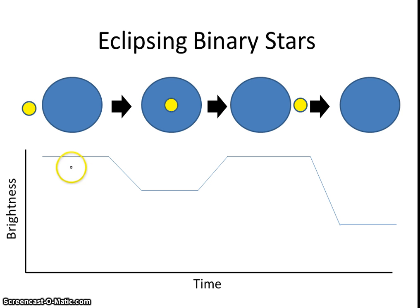As this yellow star passes in front of our blue star, we see a decrease in brightness because the yellow star is blocking part of the light coming from the blue star.